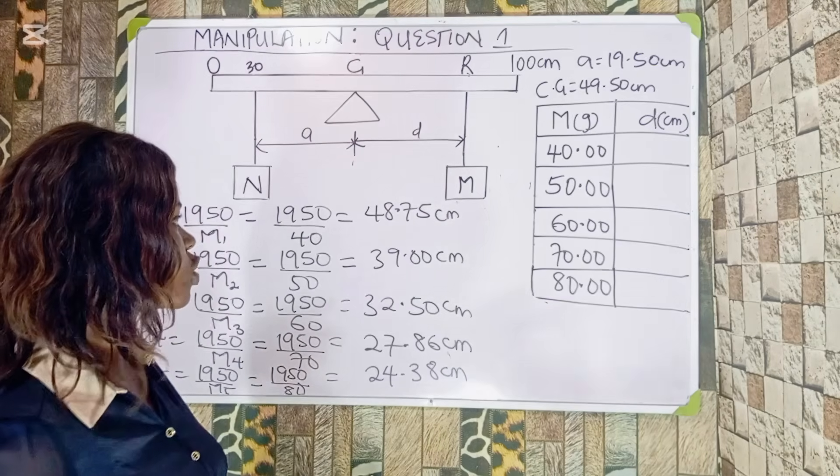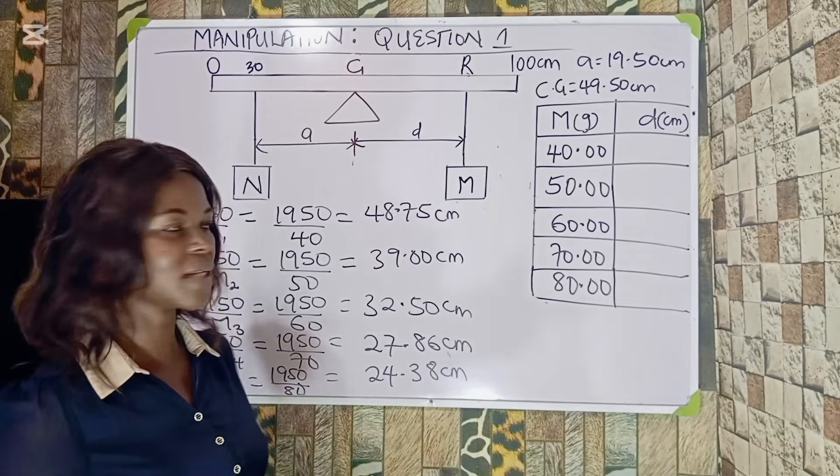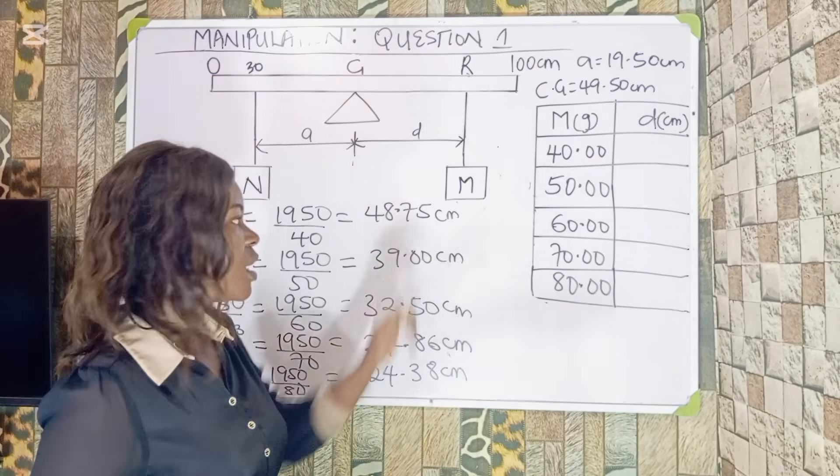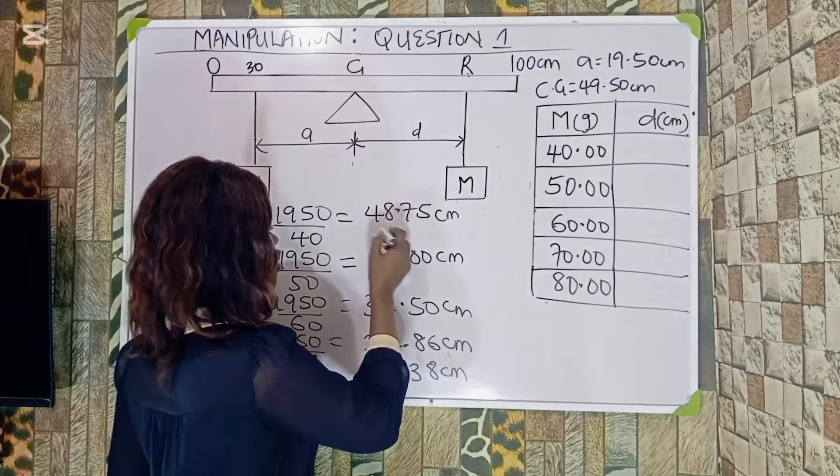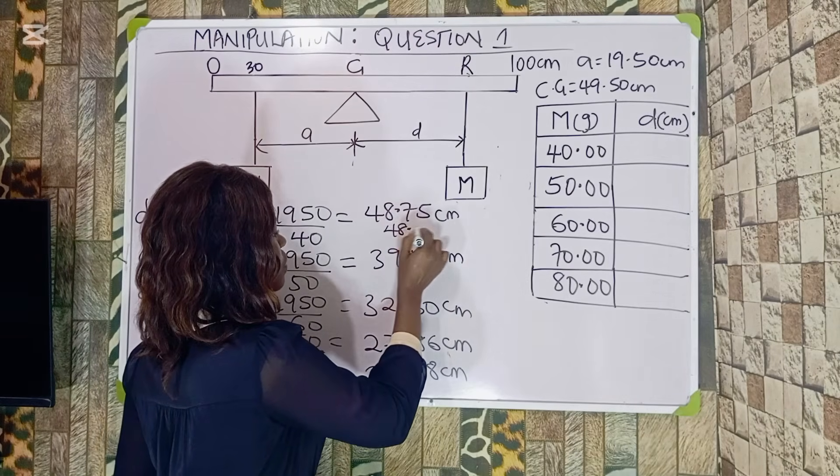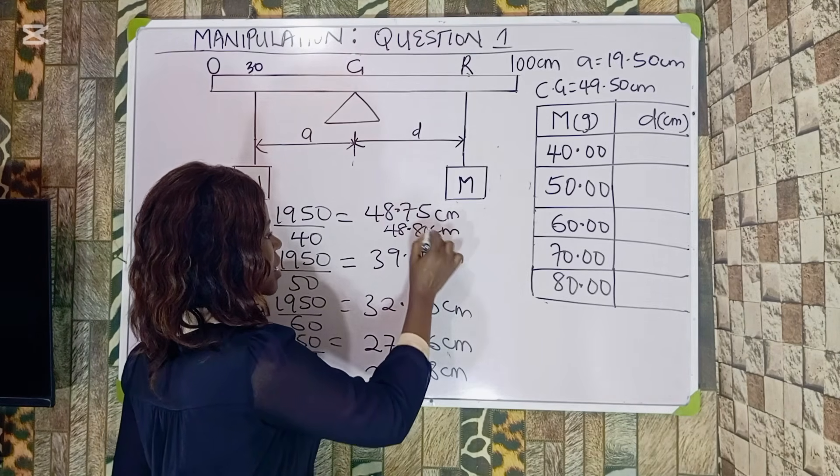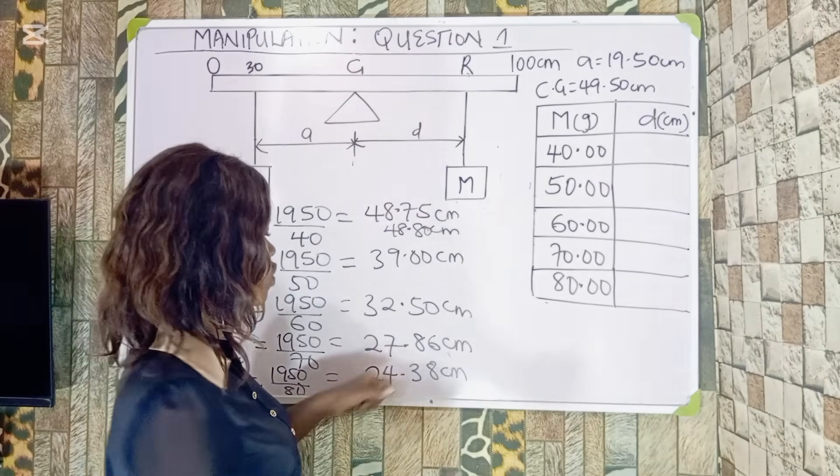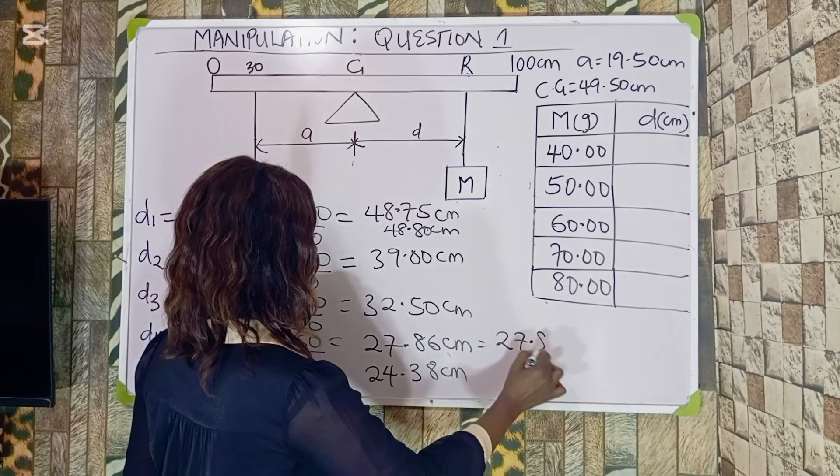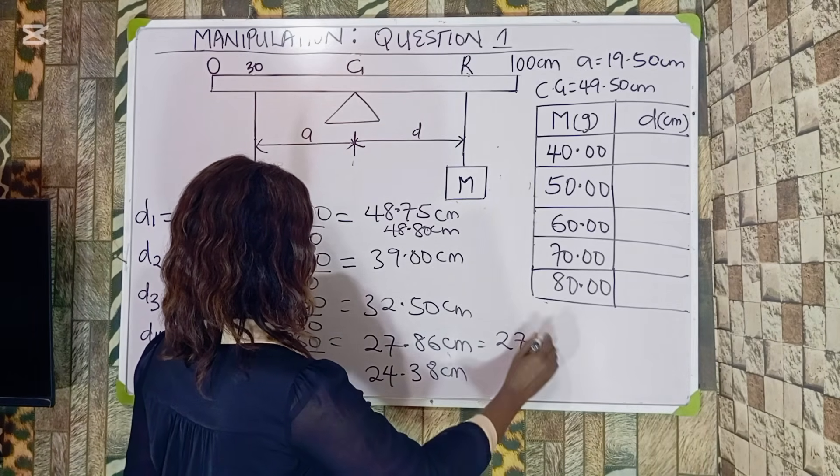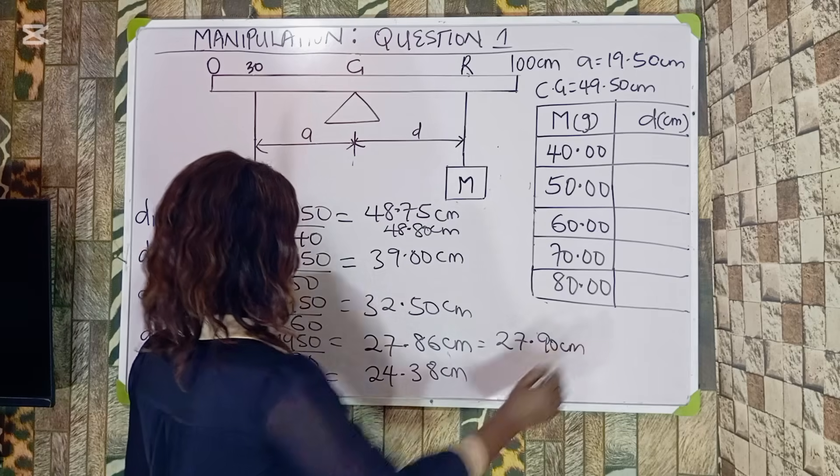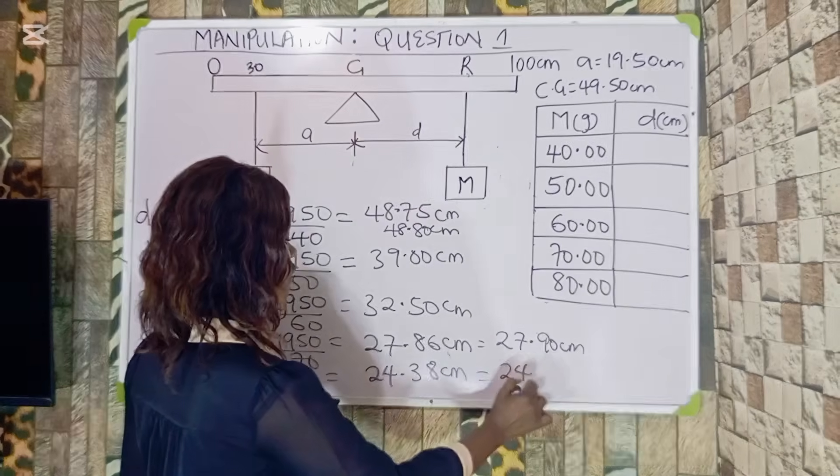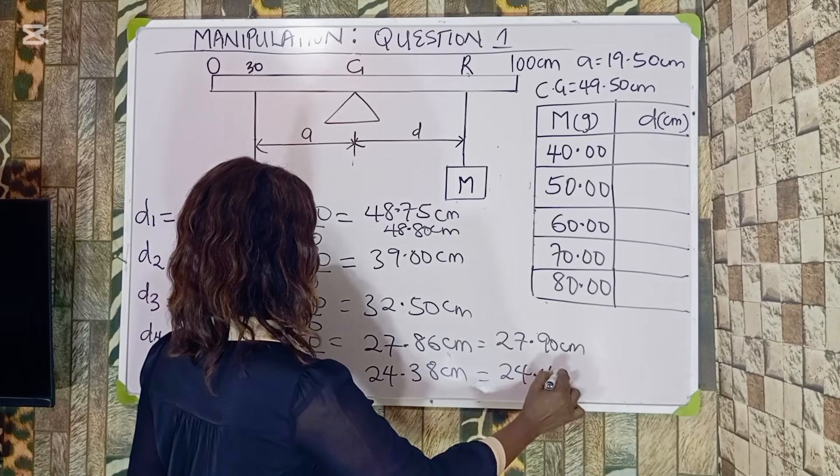Then the last one, which is D5, equals 1950 over M5, which equals 1950 over 80. Let's divide it, that gives me 24.38 centimeters. For us to put in our values, remember that we cannot see these two digits on a meter rule. What you are going to do is approximate. For this value, we are going to use 48.8 centimeters. For this one, I am going to use 27.90 centimeters. This one is going to be 24.40 centimeters.